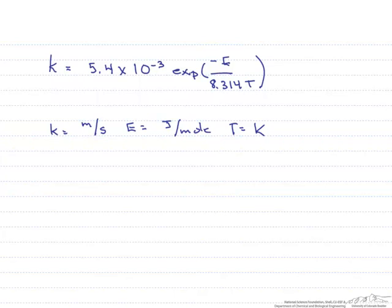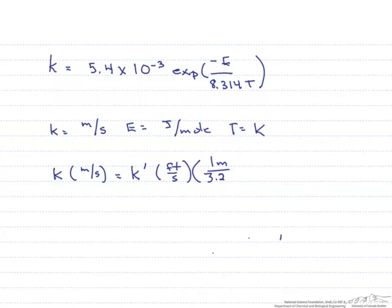Let's start with k, which is in meters per second. k will be equal to this new variable, k prime, that's in units of feet per second. However, both sides have to be dimensionally homogeneous. We need to use a conversion factor such that 1 m is equal to 3.2808 feet, and now k equals 0.3048 k prime.